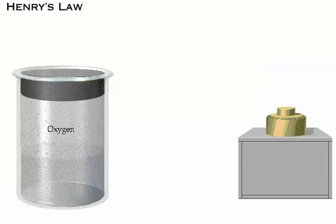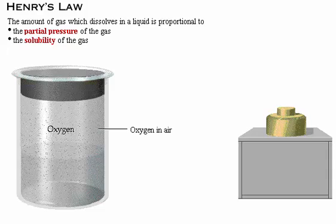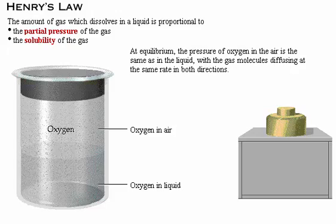Within the lungs, oxygen and carbon dioxide diffuse between the air in the alveoli and the blood — a movement between a gas and a liquid. This movement is governed by Henry's Law, which states that the amount of gas which dissolves in a liquid is proportional to both the partial pressure and the solubility of the gas. In this container, the oxygen in the air is at equilibrium with the oxygen in the liquid. At equilibrium, the pressure of the oxygen in the air is the same as in the liquid, with the gas molecules diffusing at the same rate in both directions.